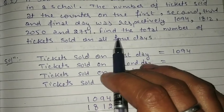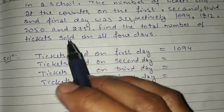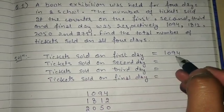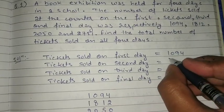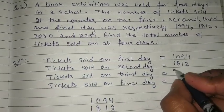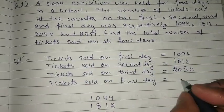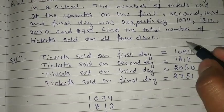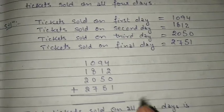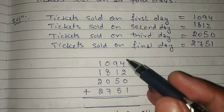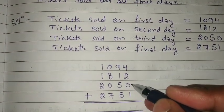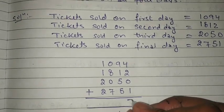So ticket sold on the first day was 1,094, ticket sold on the second day was 1,812, ticket sold on the third day was 2,050, and ticket sold on the fourth day was 2,751. To find the total number of tickets sold, we need to add these four numbers. We will start with the ones place: 4 plus 2 is 6, plus 0 is 6, plus 1 is 7.